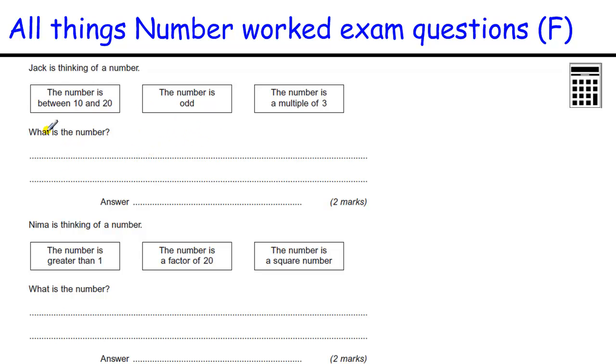Jack is thinking of numbers. The number is between 10 and 20. The number is odd, so that's 11, 13, 15, 17, and 19. The number is a multiple of 3. That just leaves you with 15 because 15 is 3 times 5. The numbers are thinking of a number. The number is greater than 1. The number is a factor of 20. The number is a square number. So greater than 1. Factors of 20 are 1, 2, 20, 10, 4 times 5. It's greater than 1 so it can't be 1. And it's a square number. 2 is not a square number, 5 is not, 10 is not. 4 equals 2 times 2, so that's a square number.